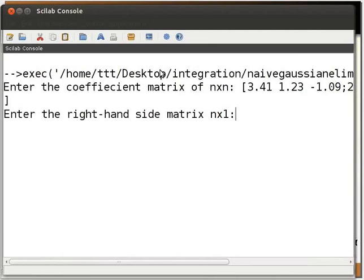The next prompt is for matrix B. So, we type open square bracket 4.72 semicolon 3.1 semicolon 2.91 close square bracket.